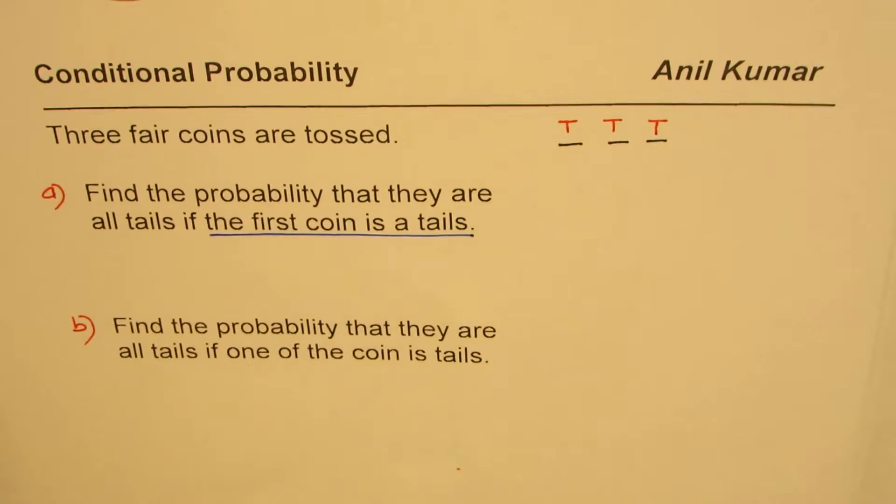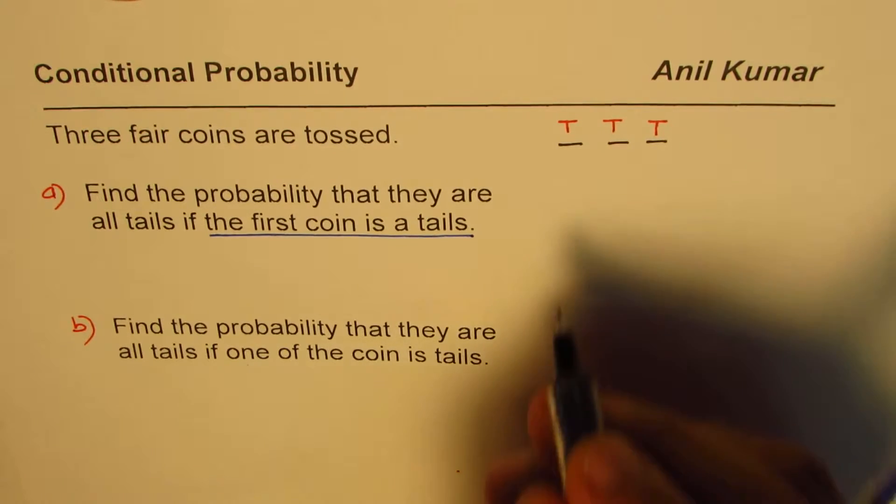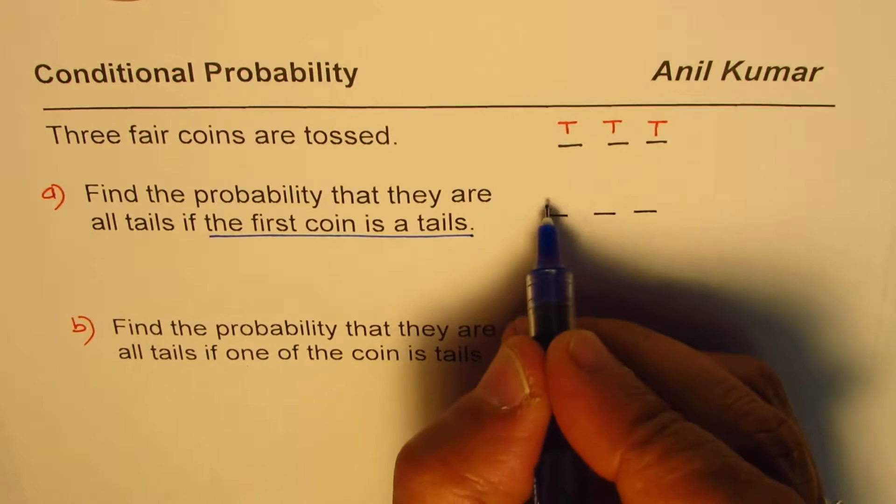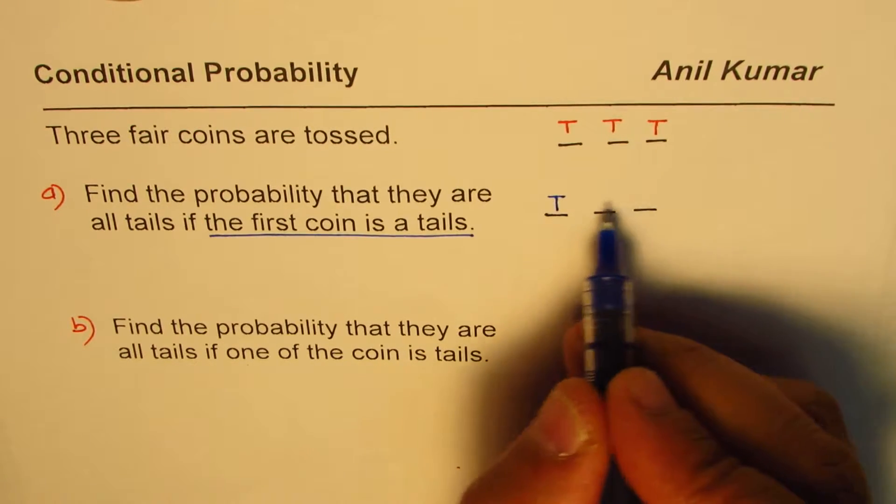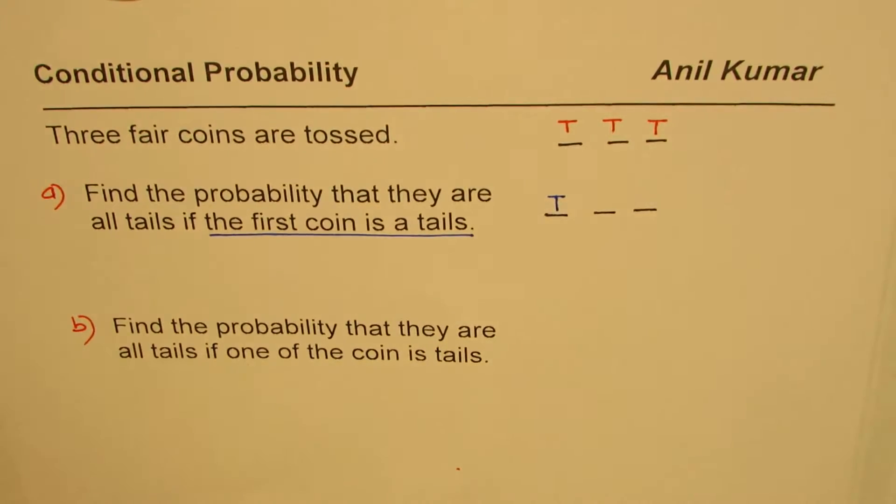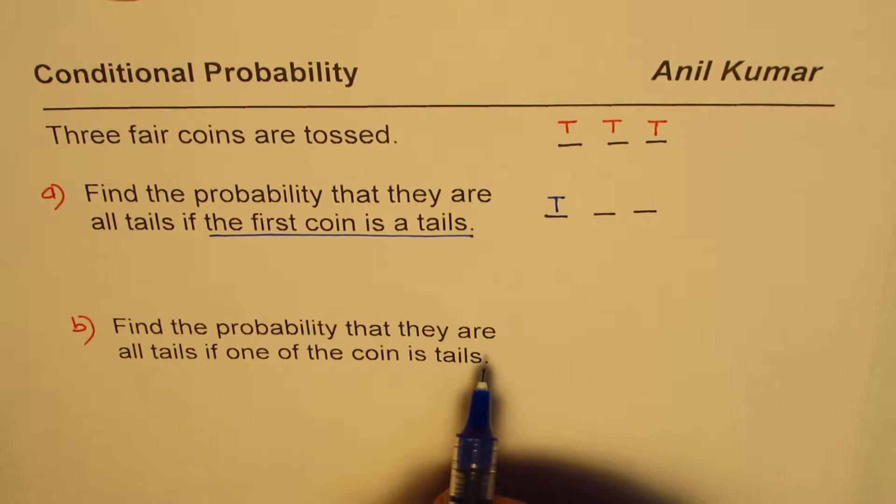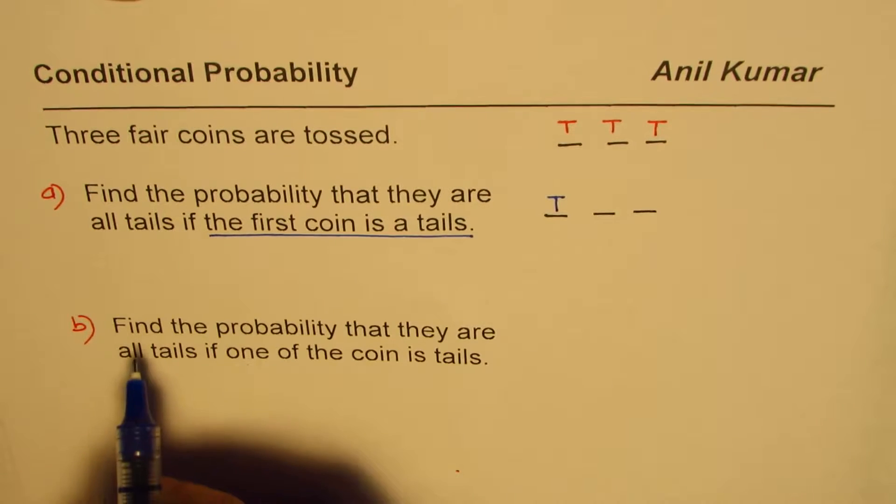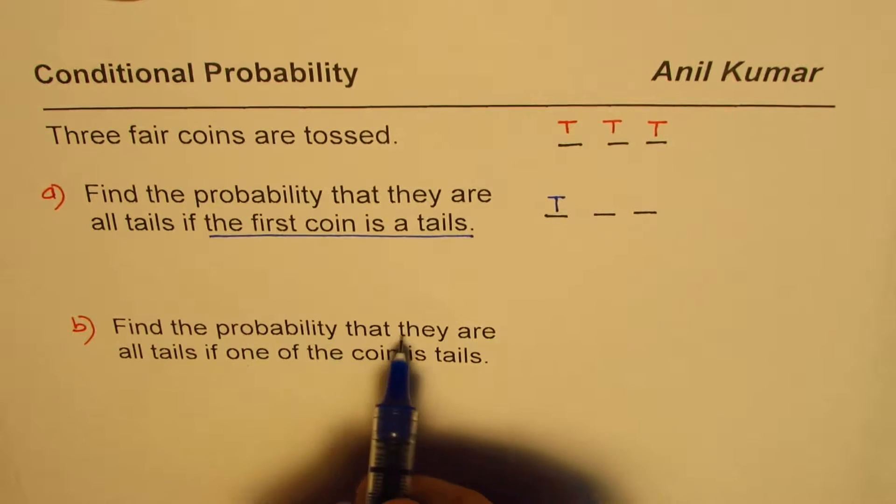In our first case we are given a condition that the first coin is a tail. So we are given this one is a tail, now find the probability of getting two more tails. That is how the question is. The second part of this question is: three fair coins are tossed, find the probability that